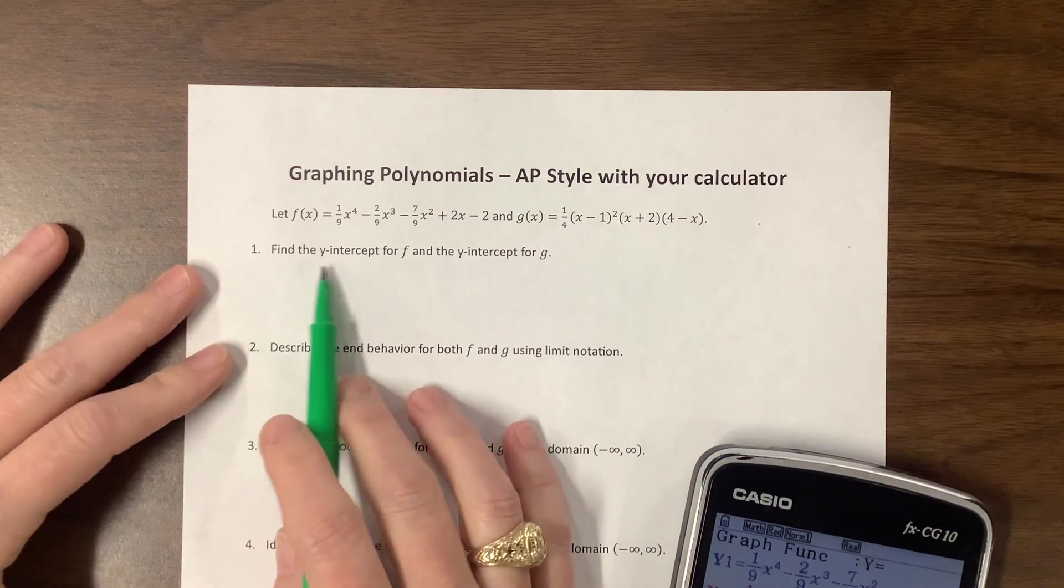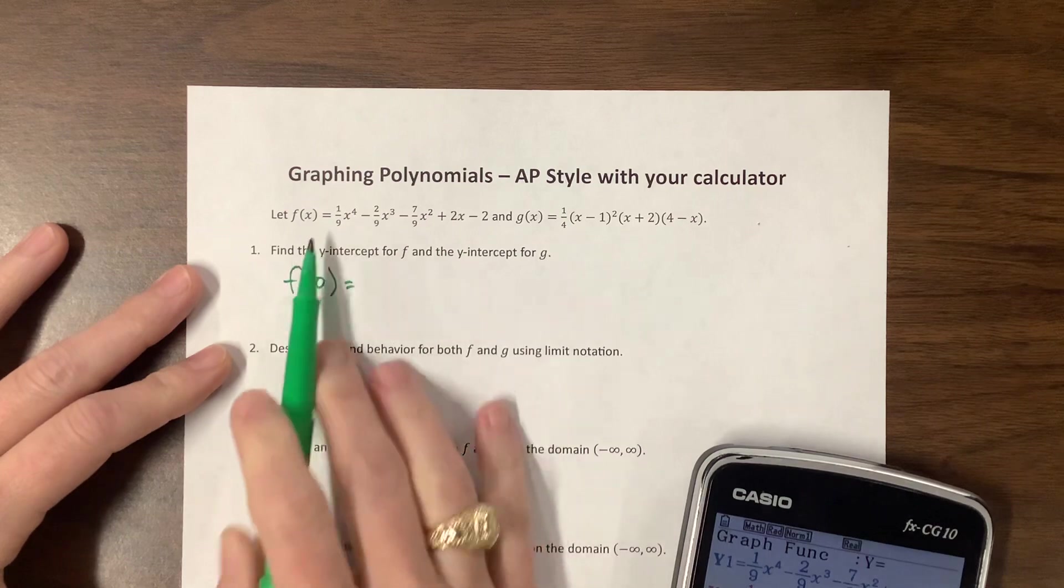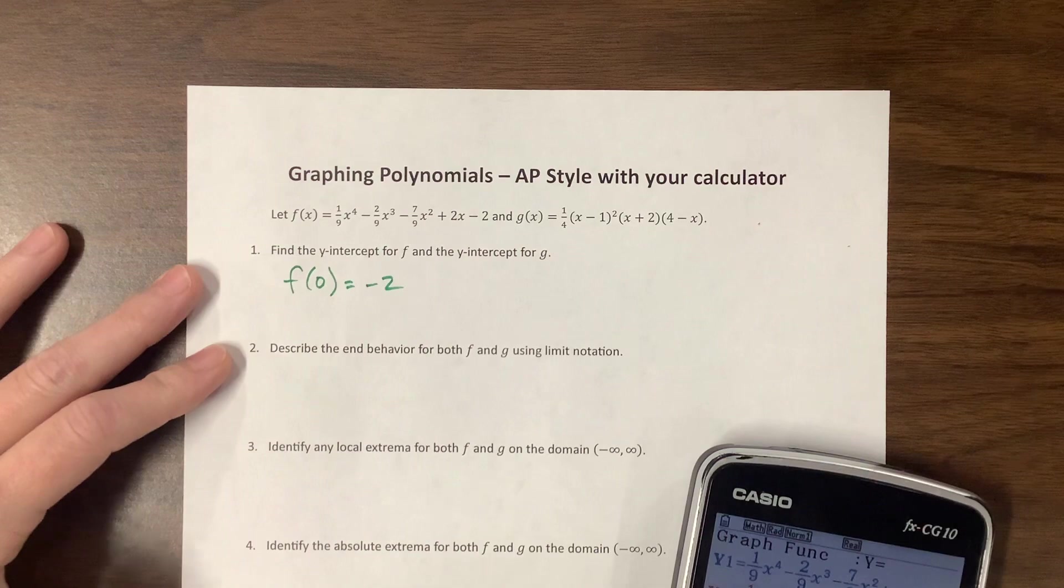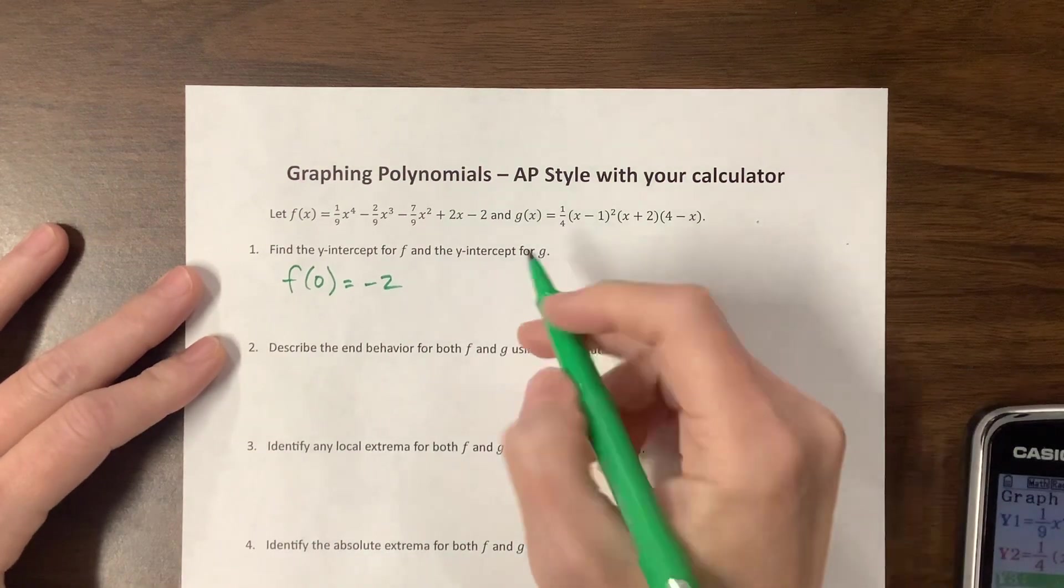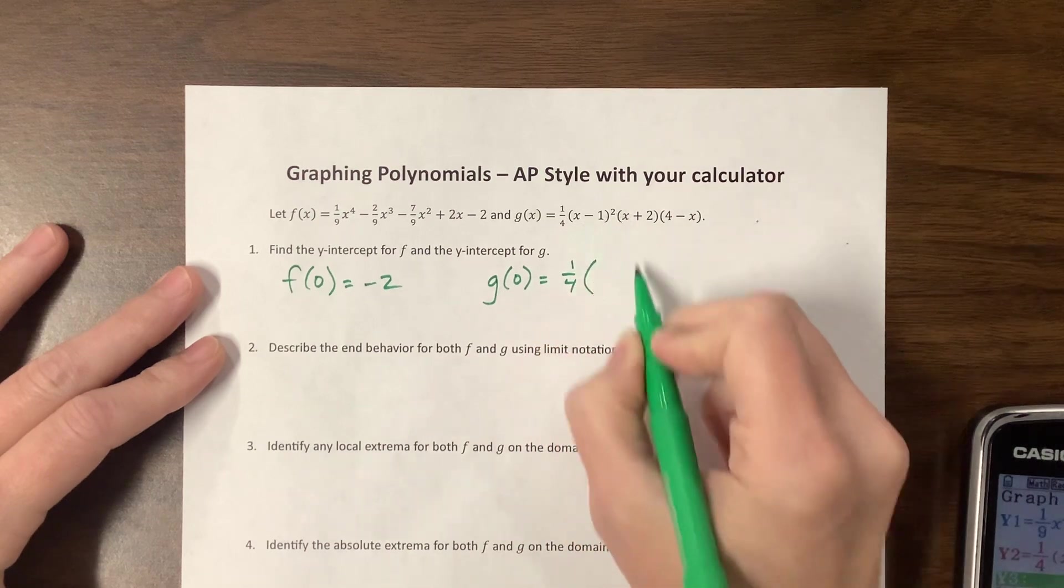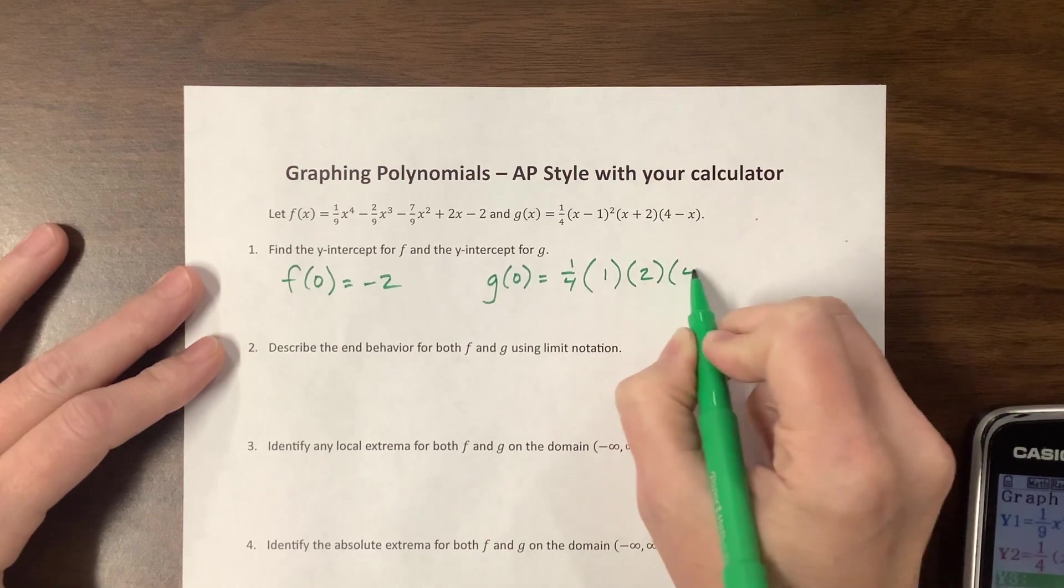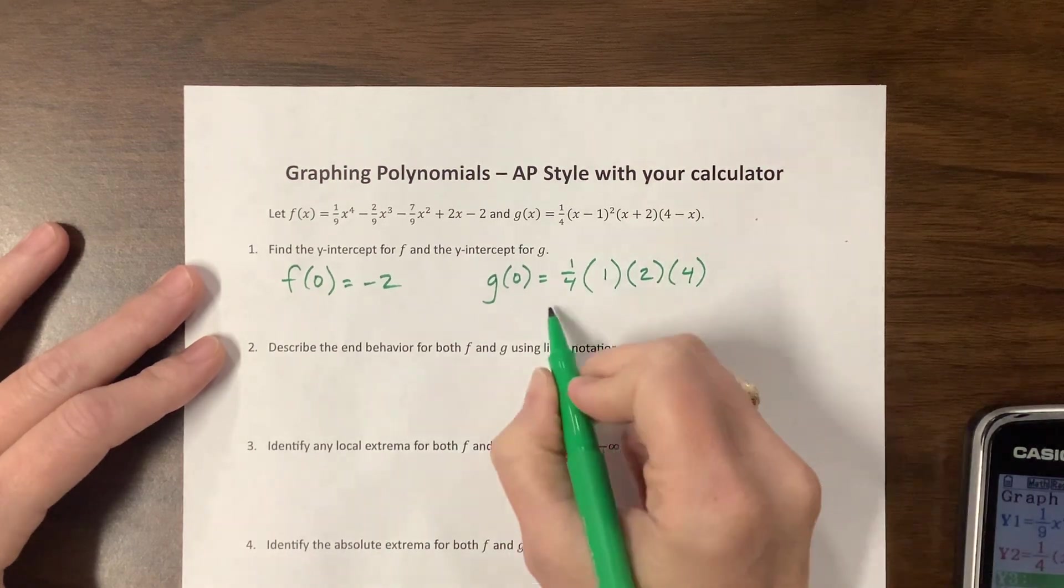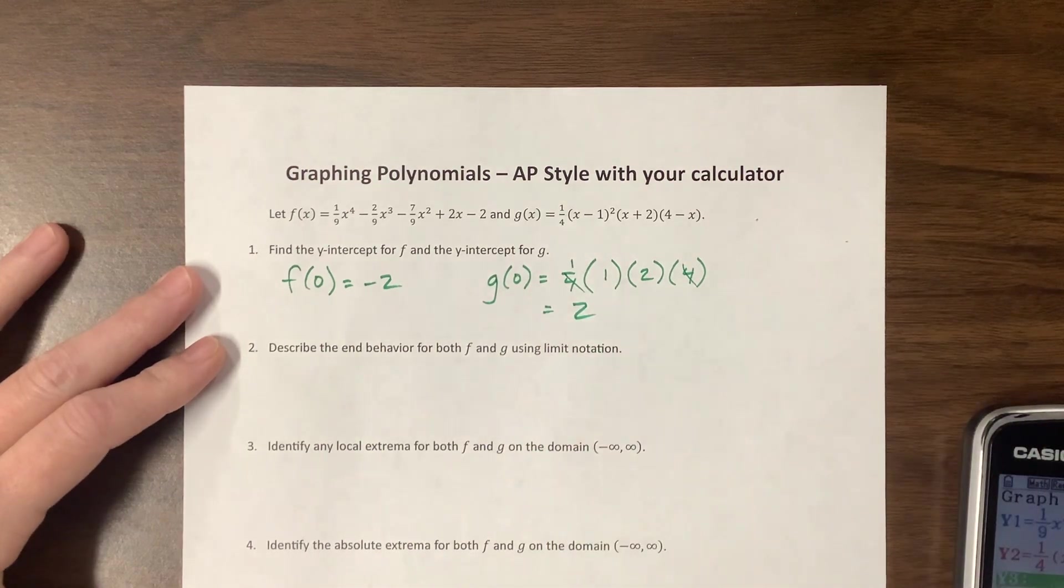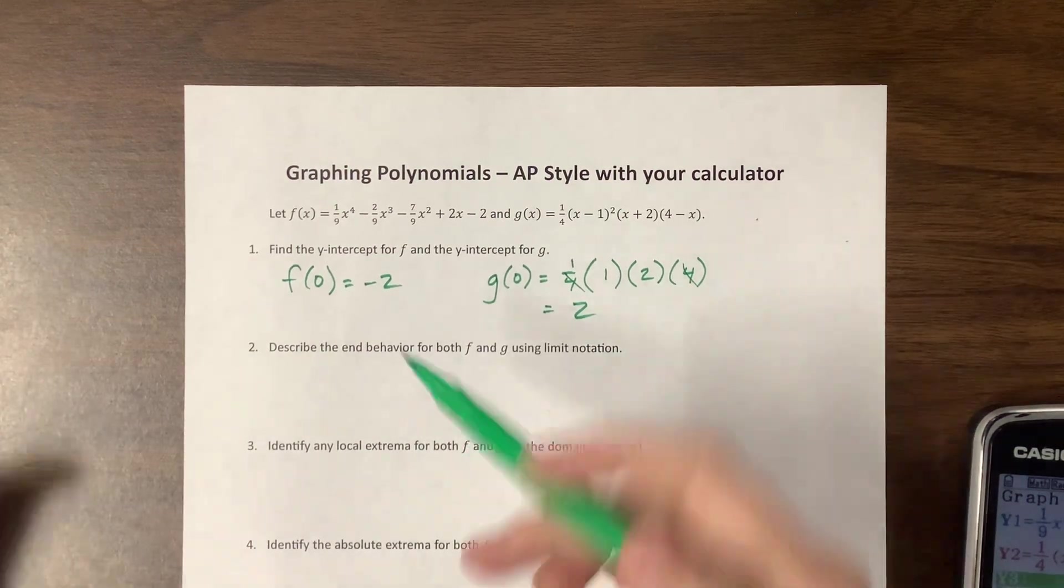It says to find the y-intercept. Well, the y-intercept is when x equals zero. When I plug in zero for x, all those terms are gone and I'm just left with negative two. The next one, the g one, was a little more involved because I have one-fourth times. So when I put in zero, I get negative one squared which is positive one, times two, times four. A fourth of the fours cancel and I'm just left with two. So straightforward, but don't forget what the question is asking.